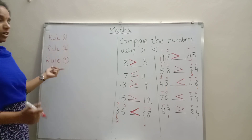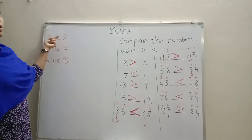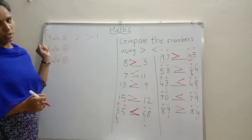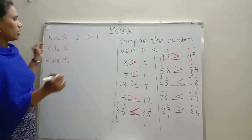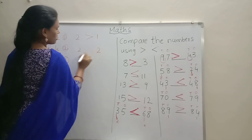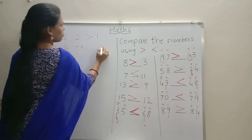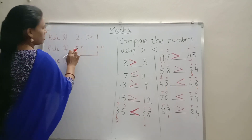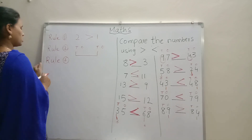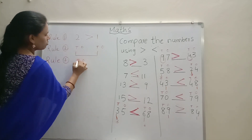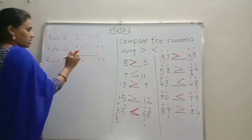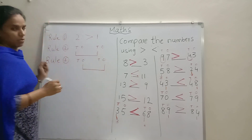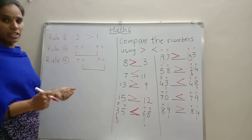So we have three rules. Rule number one: two-digit number is always bigger than one-digit number. Rule number two: when we have two-digit numbers on both sides, first compare the tens place numbers. Rule number three: when tens place numbers are equal, then compare only the ones place numbers. Okay children? This is very easy.